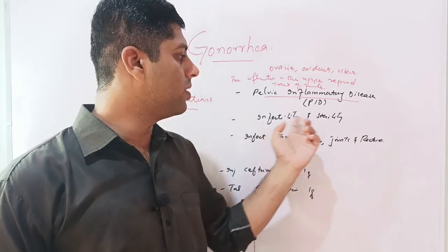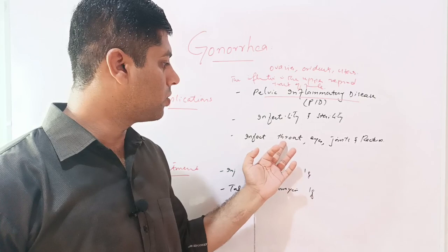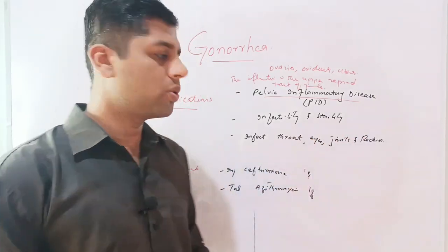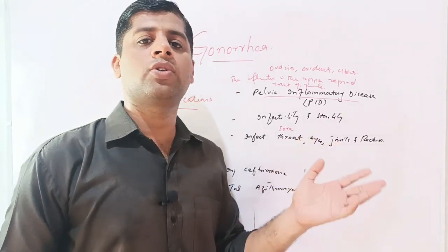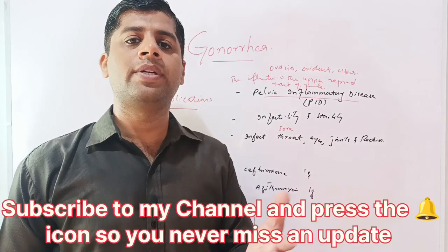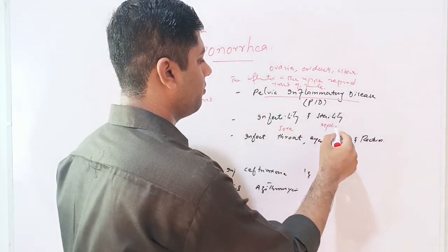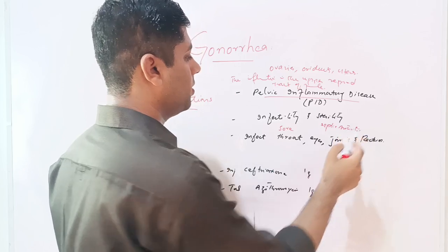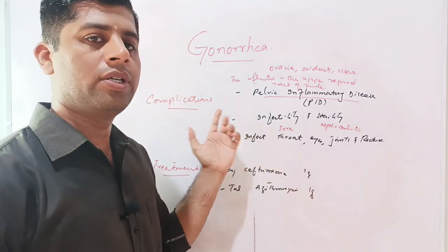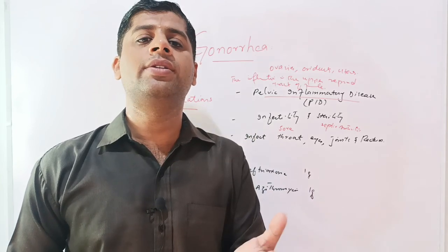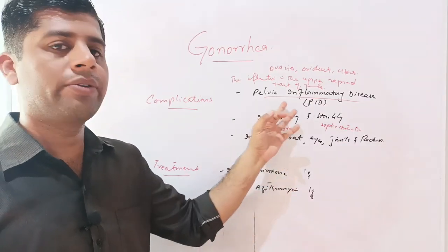Gonorrhea can cause infertility as well as sterility due to pelvic inflammatory disease in females. Additionally, Neisseria gonorrhea bacteria also infects the throat, eyes, joints, and rectum. In the throat it causes sore throat. In the eyes, it causes ophthalmic complications — pus is discharged from the eyes and it may lead to blindness. In the joints it causes septic arthritis, with inflammation and pus accumulation. The rectum is inflamed, painful, and pus is discharged. These are complications if the disease is left untreated or the bacteria becomes resistant.